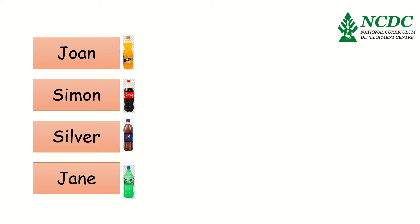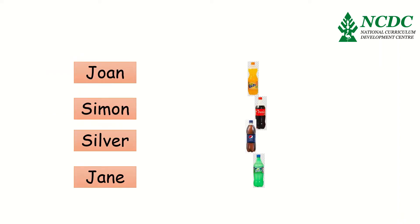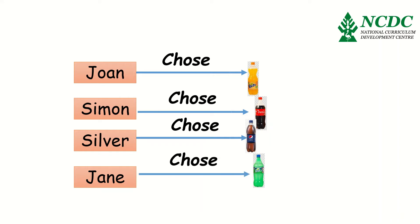This information can be presented differently. Look at this. We can use arrows to show that Joan chose a Fanta, Simon chose a Coke, Silva chose a Pepsi-Cola, and Jane chose a Sprite.